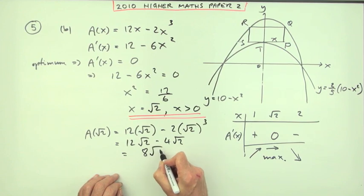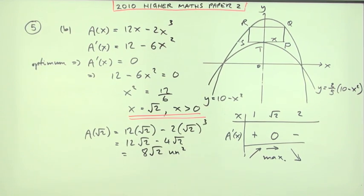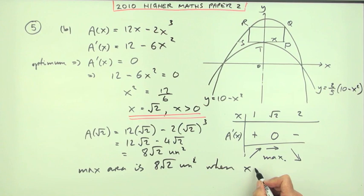So altogether the answer is 8 root 2 units squared. And why not finish it off with a statement? Maximum area is 8 root 2 units squared when x equals root 2 units.